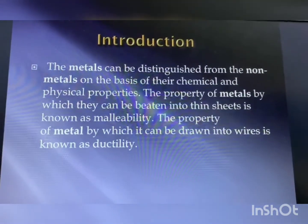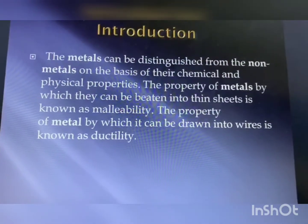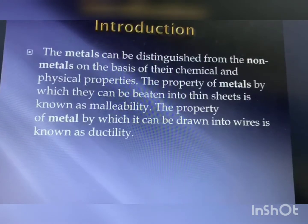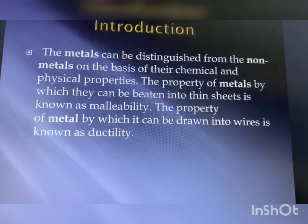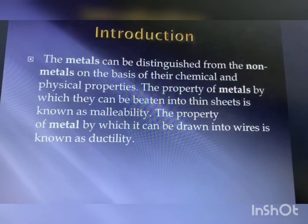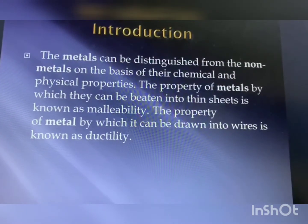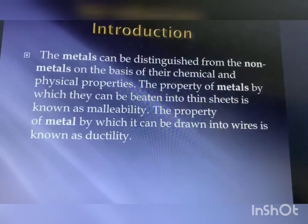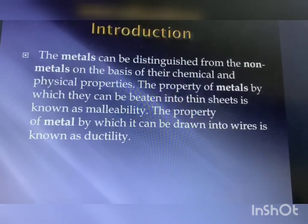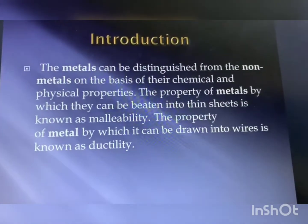In the introductory part, metals can be distinguished from nonmetals on the basis of their chemical and physical properties. The property of metals by which they can be beaten into thin sheets is known as malleability. The property of a metal by which it can be drawn into wires is known as ductility.